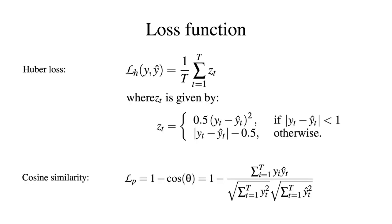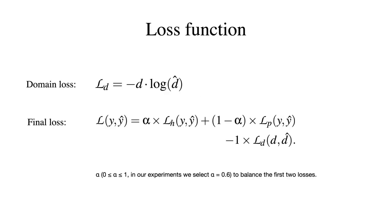The loss function we designed consists of three parts. The first is the Huber loss. Compared with the mean absolute error loss, Huber loss is more robust. We use the cosine similarity to rectify the span of the swing tracking during training. Then we use the domain loss. The final loss consists of these three losses. We introduced the parameter alpha to balance the first two losses. In our experiment, we selected alpha equals 0.6.